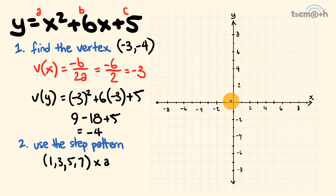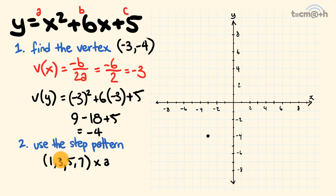Let's put that in — we go back 3 and down 4. So we have the vertex plotted right there. Now for the second step, we're going to use the step pattern 1, 3, 5, 7 times A. We know A is equal to 1, so we multiply by 1 and we end up with a step pattern which is just the same: 1, 3, 5, 7.